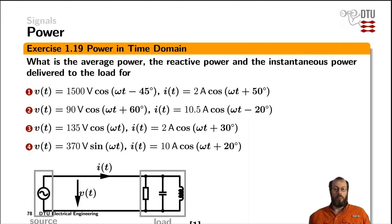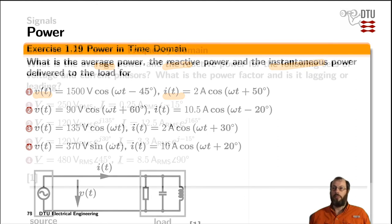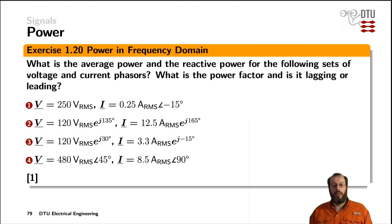Now that we have learned about power for AC signals, there are a couple of exercises for you to practice your new knowledge. We have four different pairings of voltages and currents given, and the question is how much average power, reactive power, and instantaneous power is delivered to the load for those signals. To also exercise working with phasors, we have another pairing of voltages and currents given as phasors, and the question is about the average power, reactive power, and whether the power factor is lagging or leading in each case.